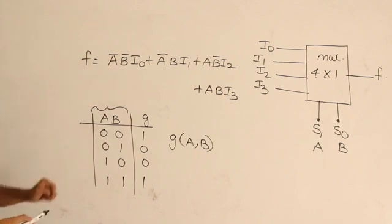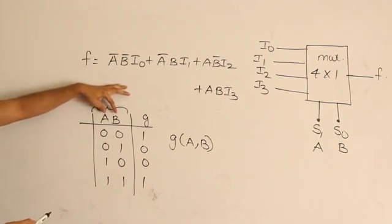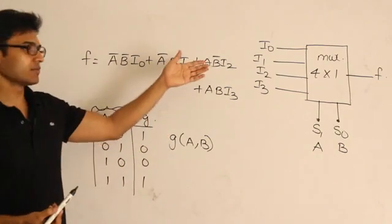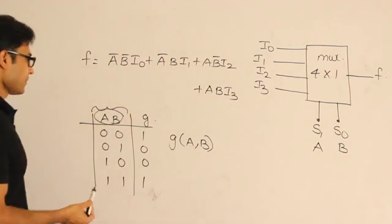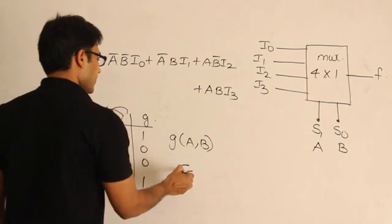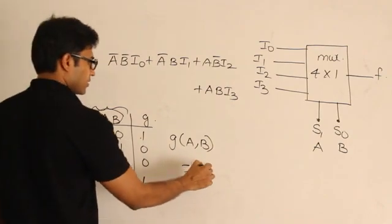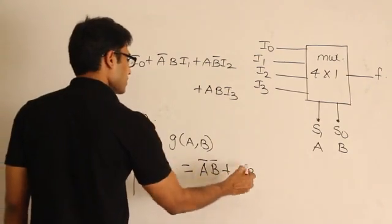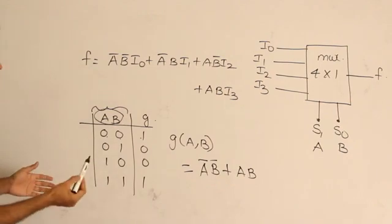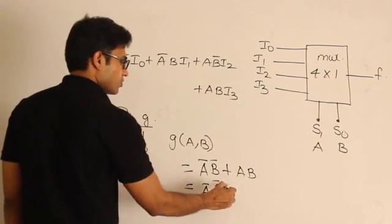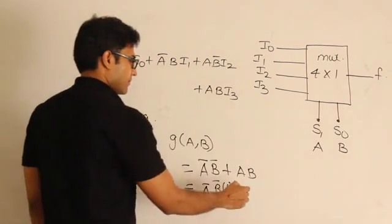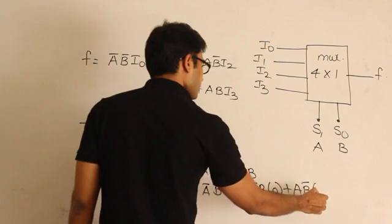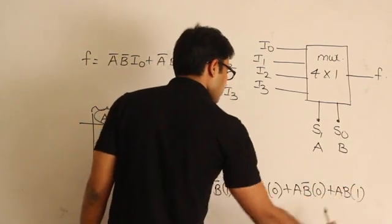The approach is to give the input variables directly to the select lines. Now write g in terms of a and b using canonical sum of products: g = a'b' + ab. We can expand this as: a'b'·1 + a'b·0 + ab'·0 + ab·1.